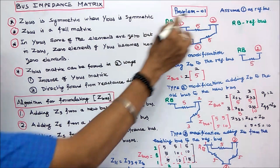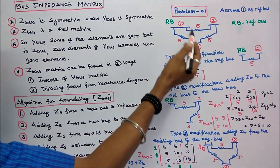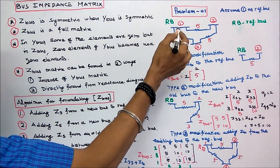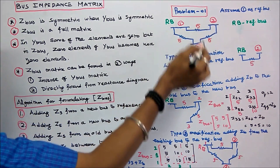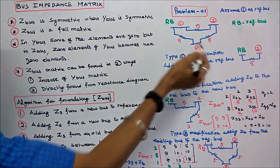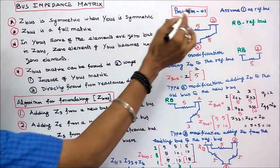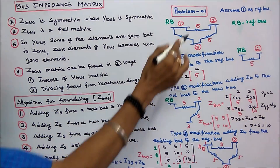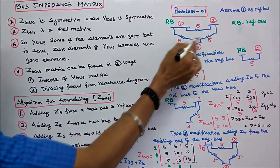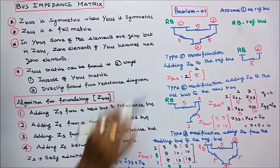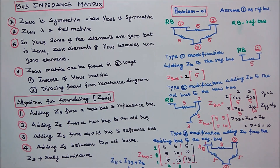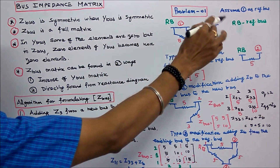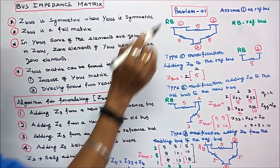This is the given problem. There are 3 buses: 1, 2, 3. There are 3 lines: 1, 2, 3. The impedances are 5, 5, 5, 5 in per unit. Assume bus 1 as the reference bus.